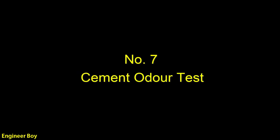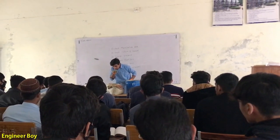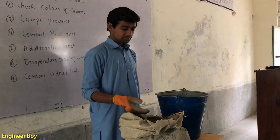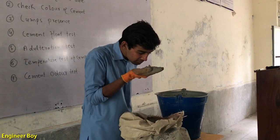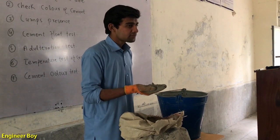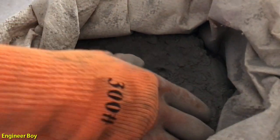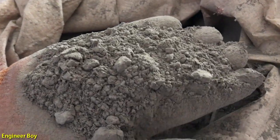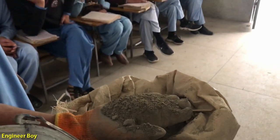Number seven, which is the last one, and that is the cement odor test. This test is performed to check the quality of cement by smelling it. Cement is naturally odorless, but if you smell an earthy smell coming from the cement bag, it is an indicator of excess amount of clay and sand in the material — meaning the clay and sand can be more than the required proportion during the manufacture of cement.